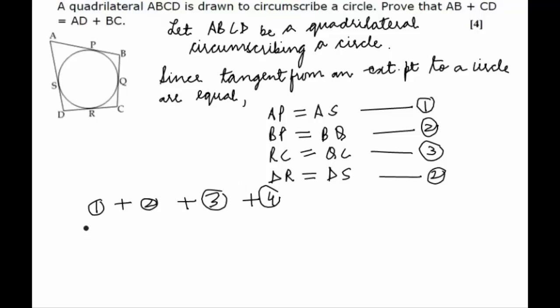We get AP plus BP plus RC plus DR equals AS plus DS plus BQ plus QC. Now, AP plus BP from the diagram...